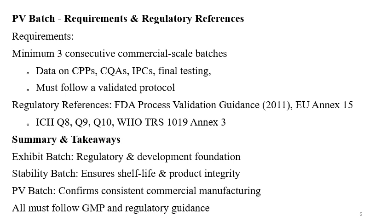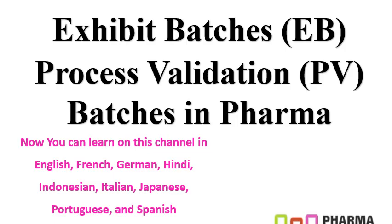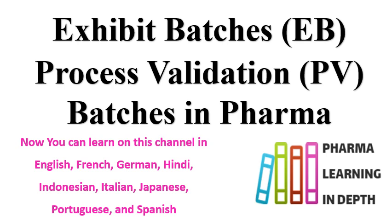In summary: the exhibit batch is a regulatory and development foundation batch; the stability batch provides information about shelf life and ensures product integrity; and the PV batch confirms consistent commercial manufacturing, proving the process is robust and consistent. All these batches are required to be taken with full GMP compliance and as per regulatory requirements. This was the information regarding exhibit batches and process validation batches in the pharmaceutical industry — the data to be submitted to regulatory authorities to get marketing authorization or generic product approval.